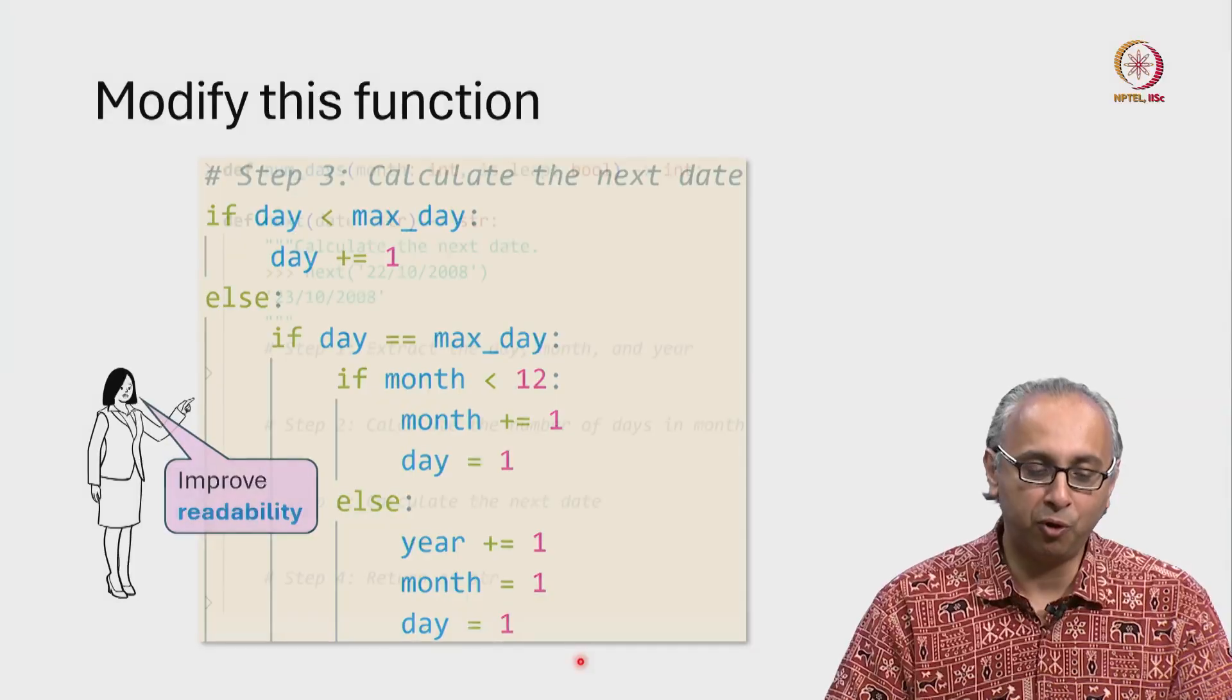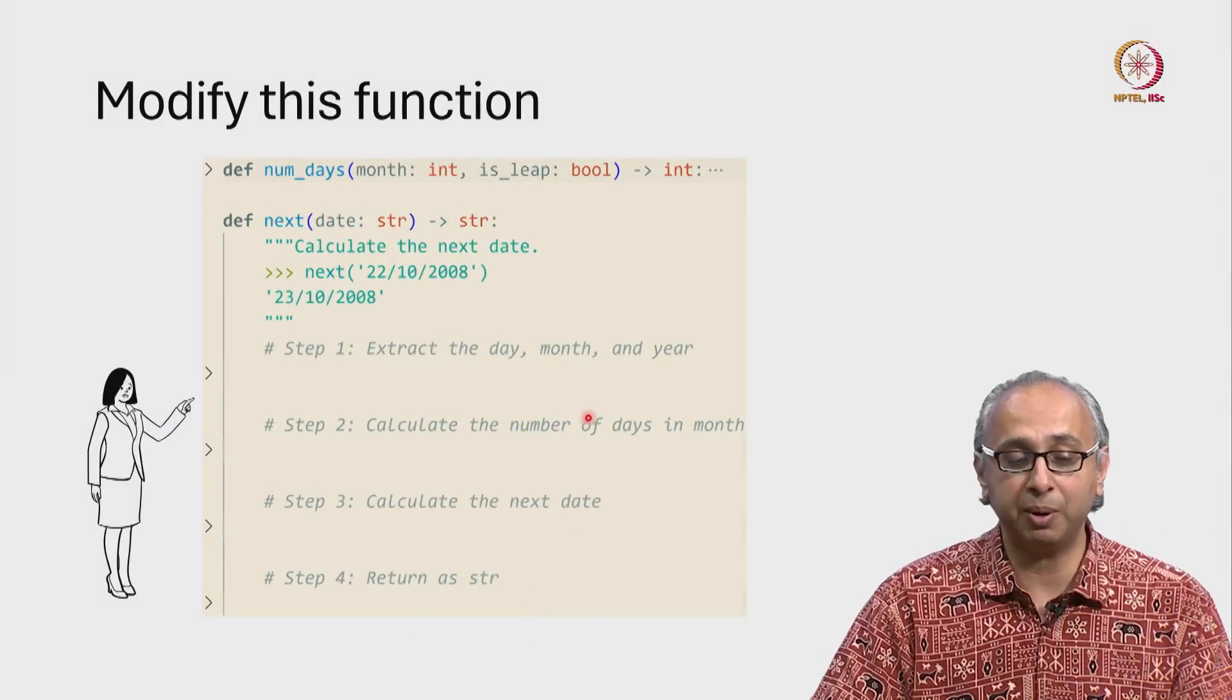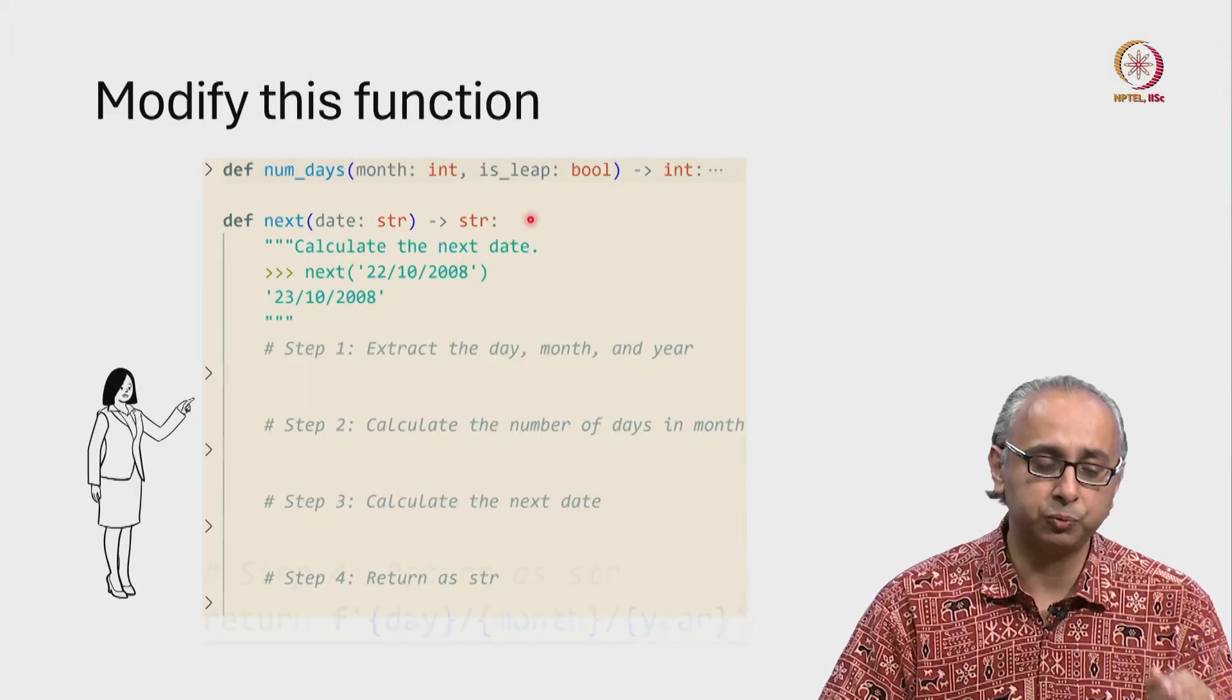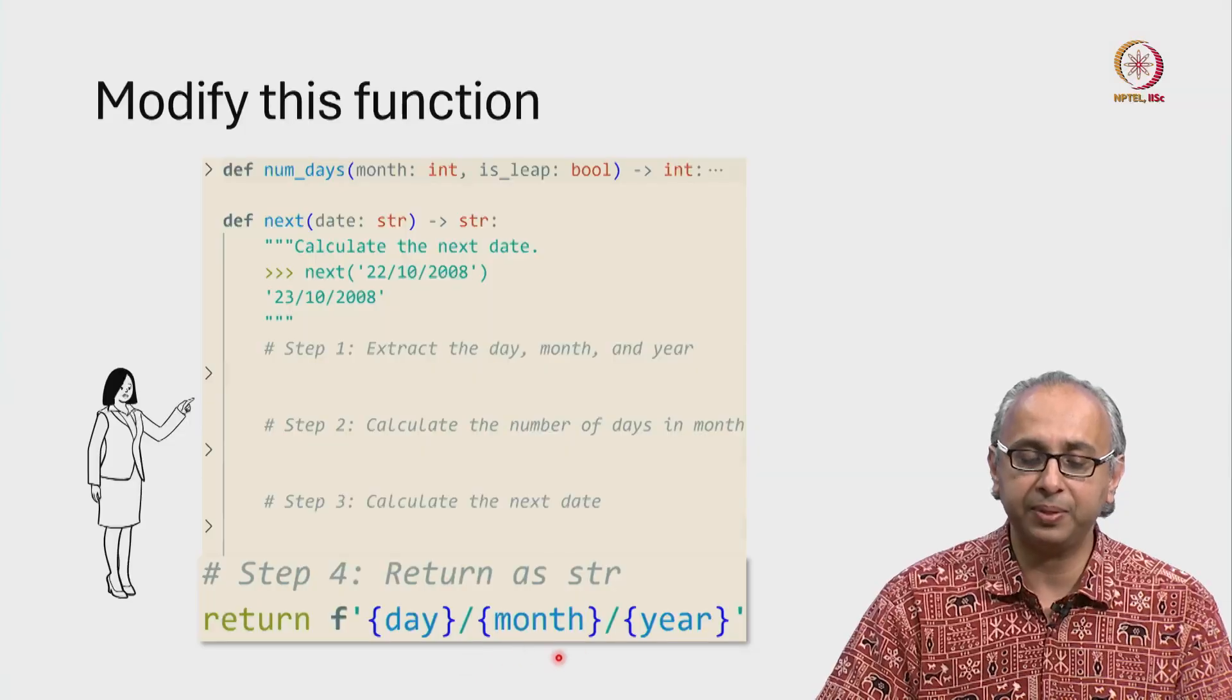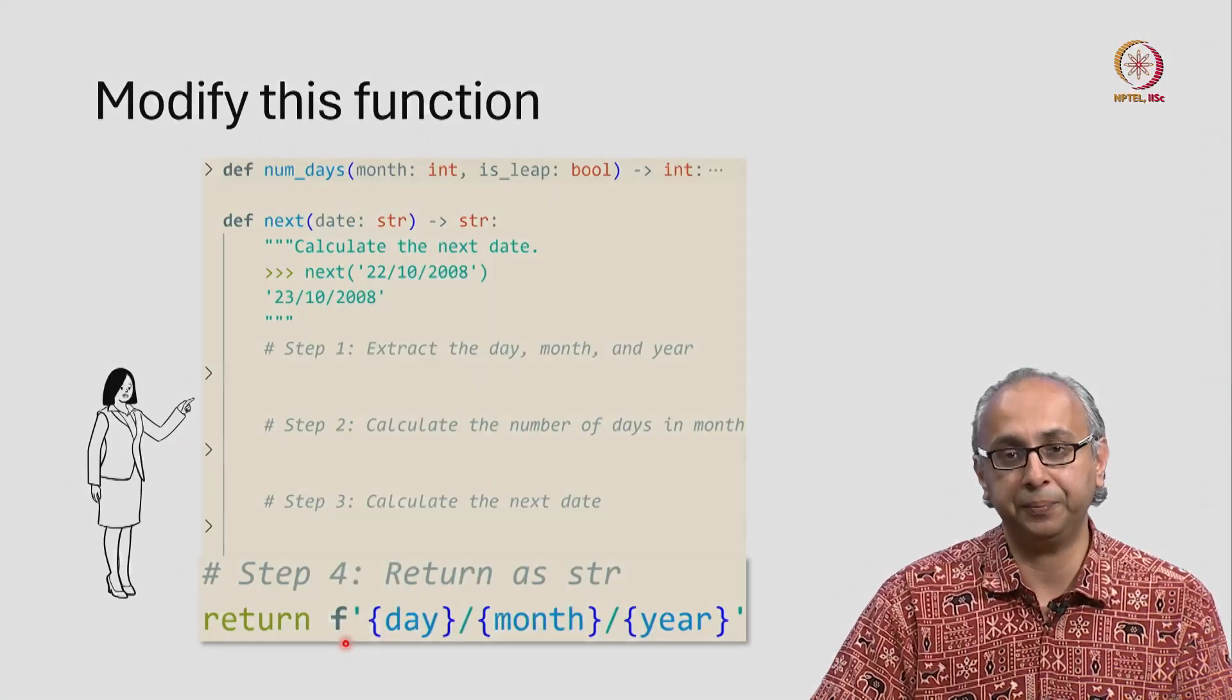Let's move on to step 4. Step 4, return the answer as a string. Remember this function has to return a string. And so this piece of code, which again our client is very happy with, just takes the day, the month, and the year and puts it in the right format using an F string.